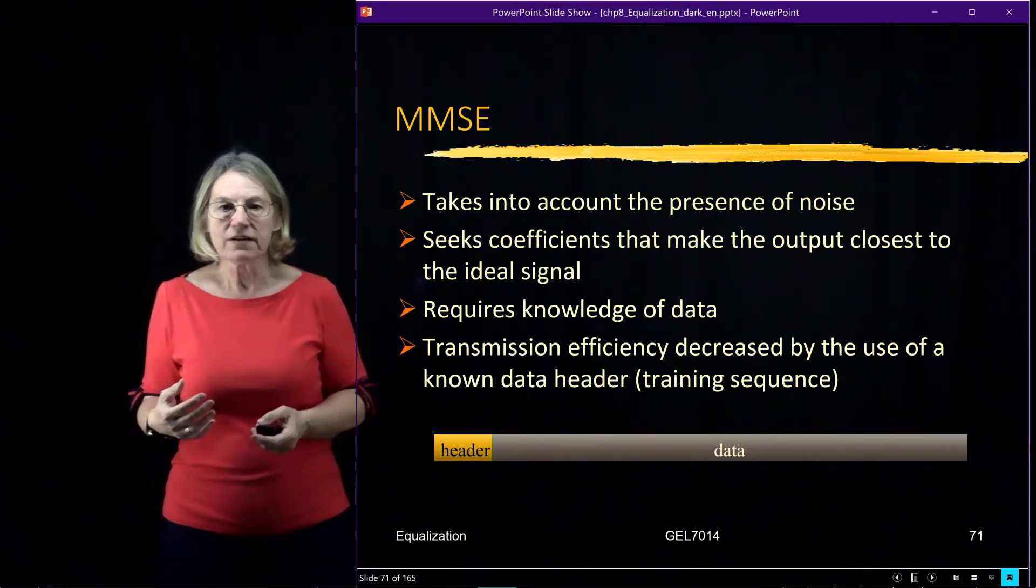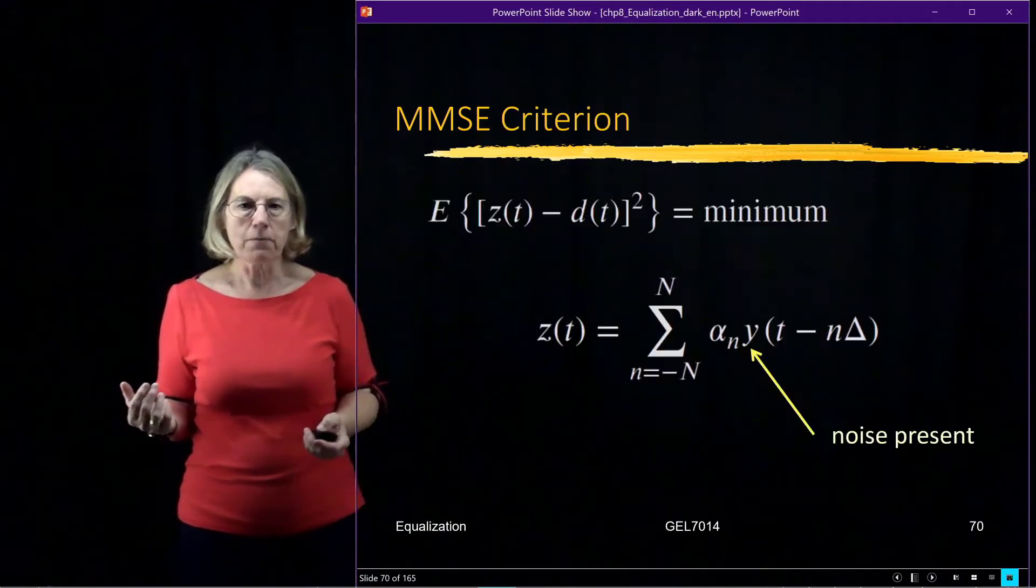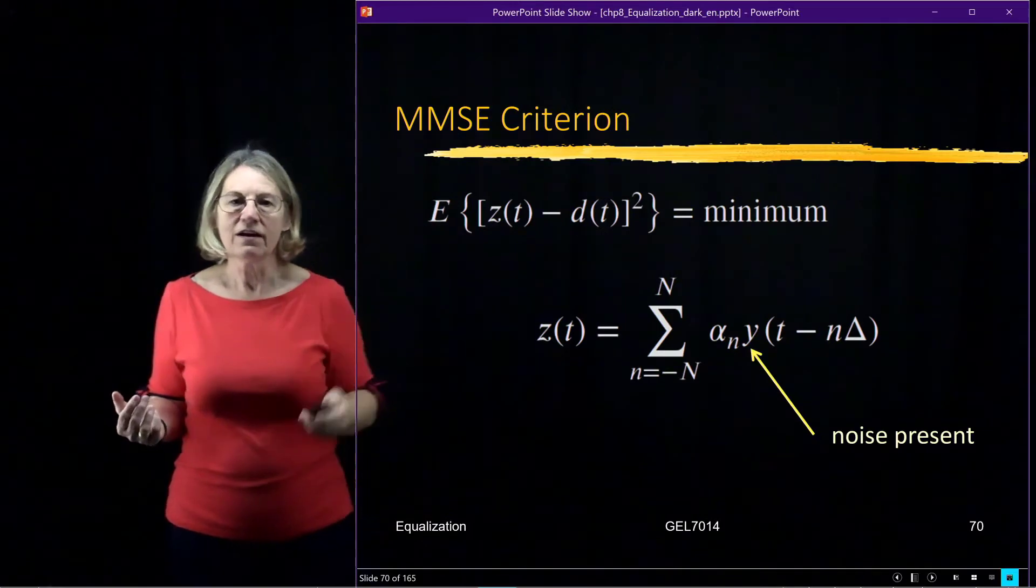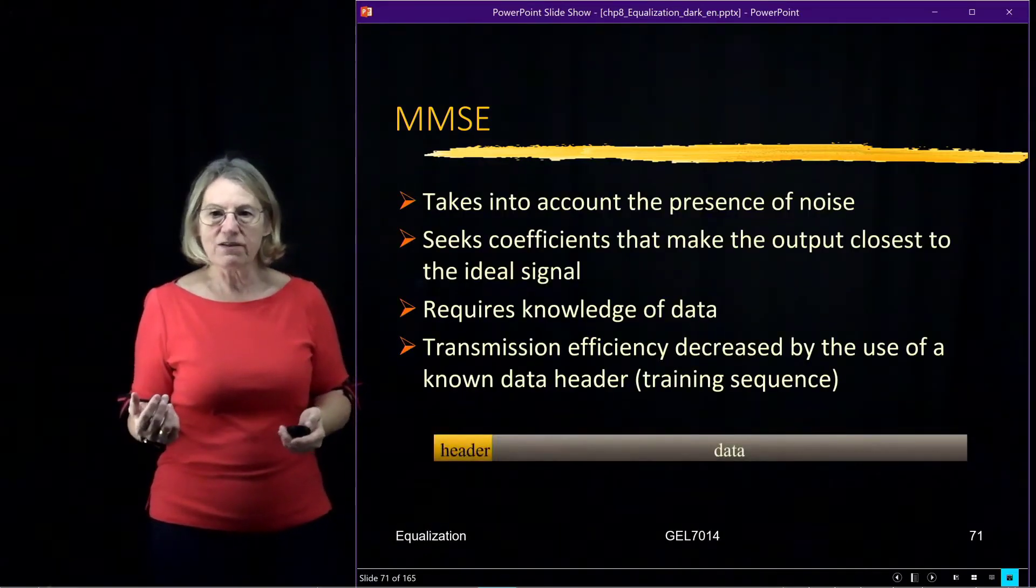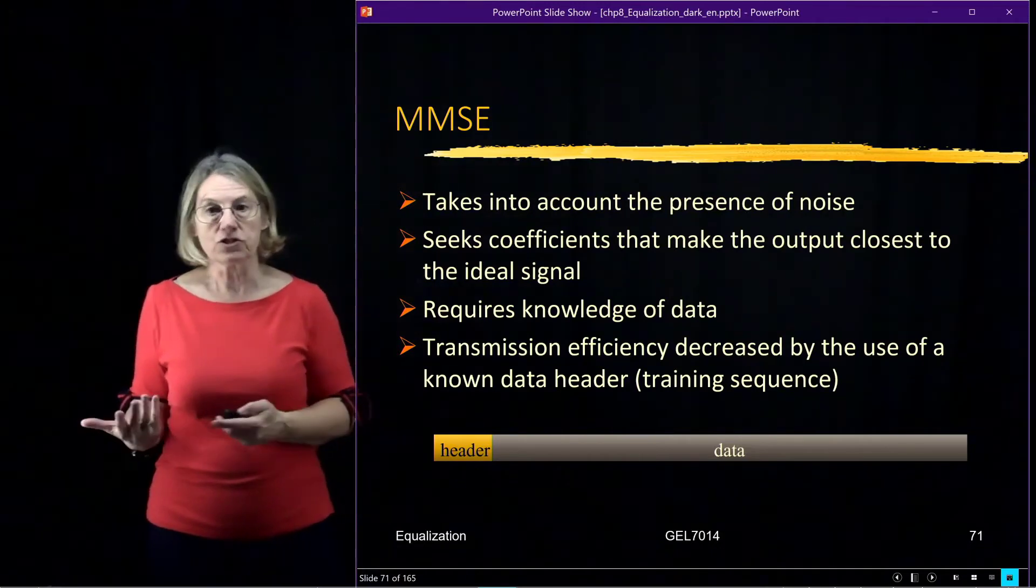So if we have perfect knowledge of the channel, we can come up with perhaps this expected value. But if we don't, and then we have to estimate it, we're going to have to know the data in order to do the estimation.